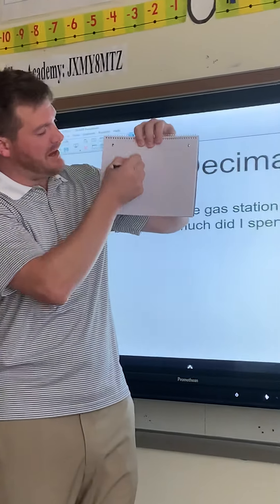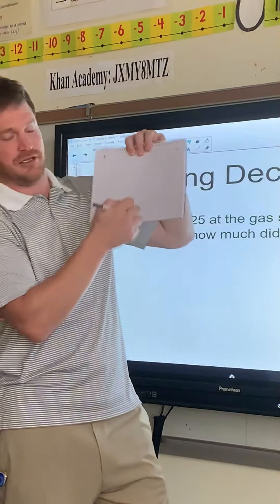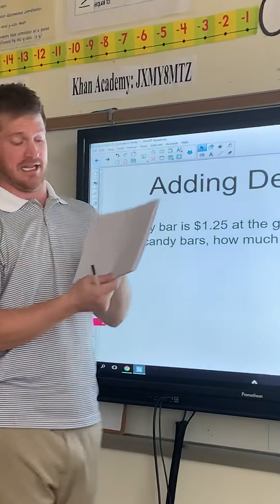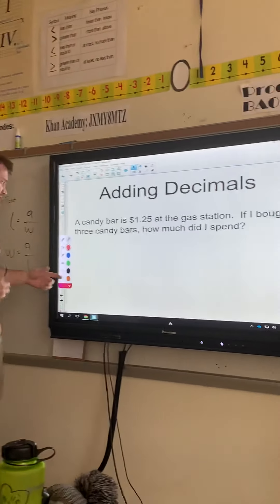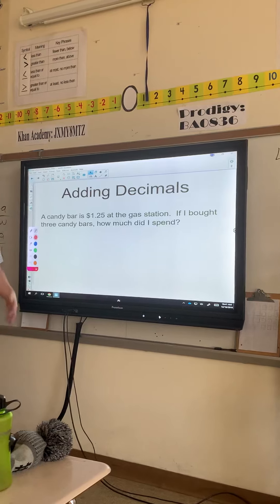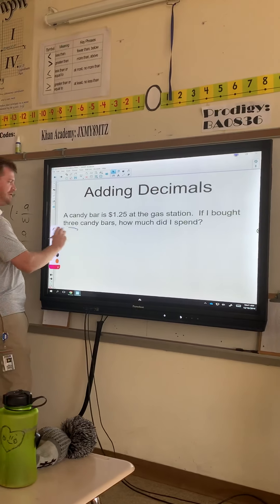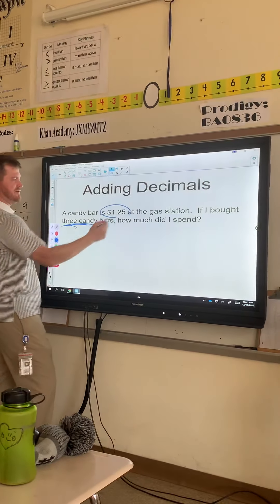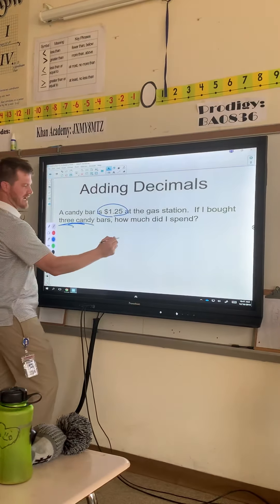The most important thing with adding decimals is making sure that the decimals are lined up. A good strategy is to turn your notebook sideways and make sure that each digit gets its own line, and the decimal gets its own line as well. What I like to do is figure out how many things we're going to add up, put those decimals first, and let the numbers fall into place.